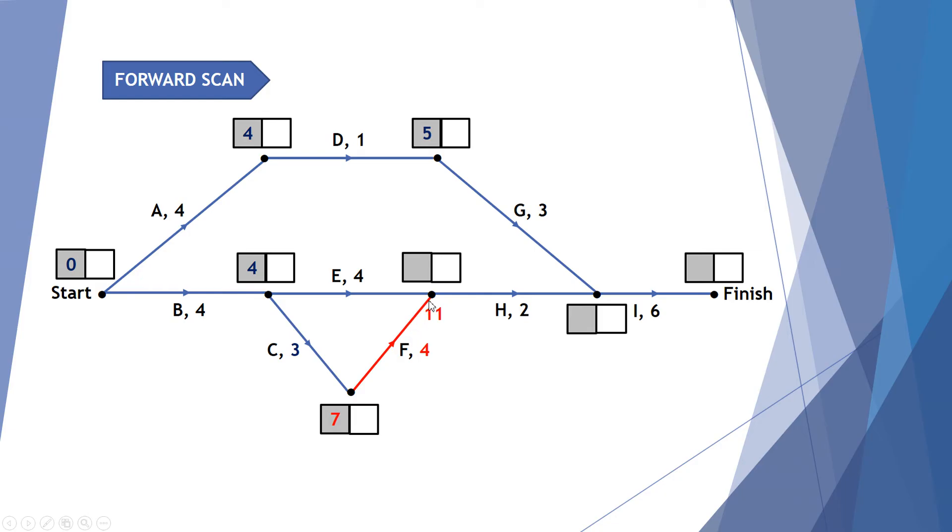You notice there's one option and two options going to this node. So we won't just put eleven weeks in the square. We need to consider what we get when we add in activity E at the end of activity B first. So B took four weeks. E takes a further four. That gives me eight weeks. When we've got two activities going to one node on a forward scan we always use the larger of the two.